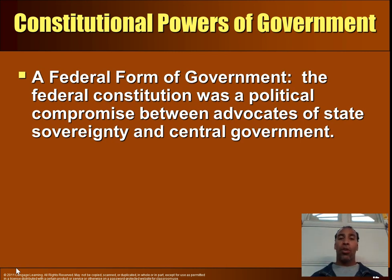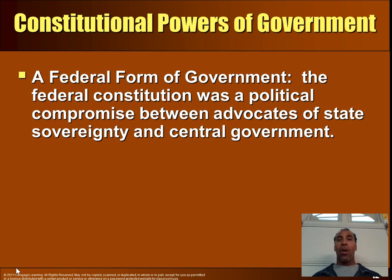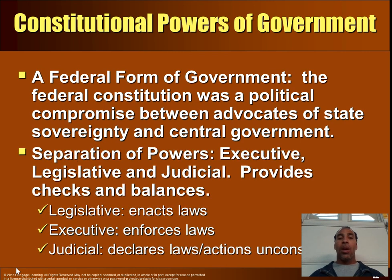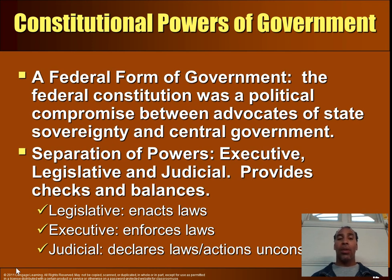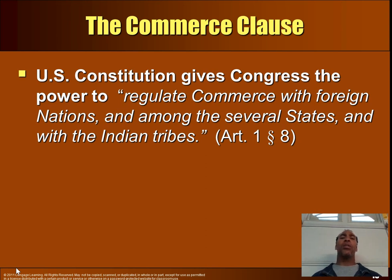Constitutional powers of government: the federal constitution was a political compromise between advocates of state sovereignty and central government. Although the government is centralized, it remains somewhat decentralized on certain matters. Separation of powers: the executive, legislative, and judicial branches provide checks and balances. The legislative branch enacts laws, the executive branch enforces them, and the judicial branch declares laws constitutional or unconstitutional.